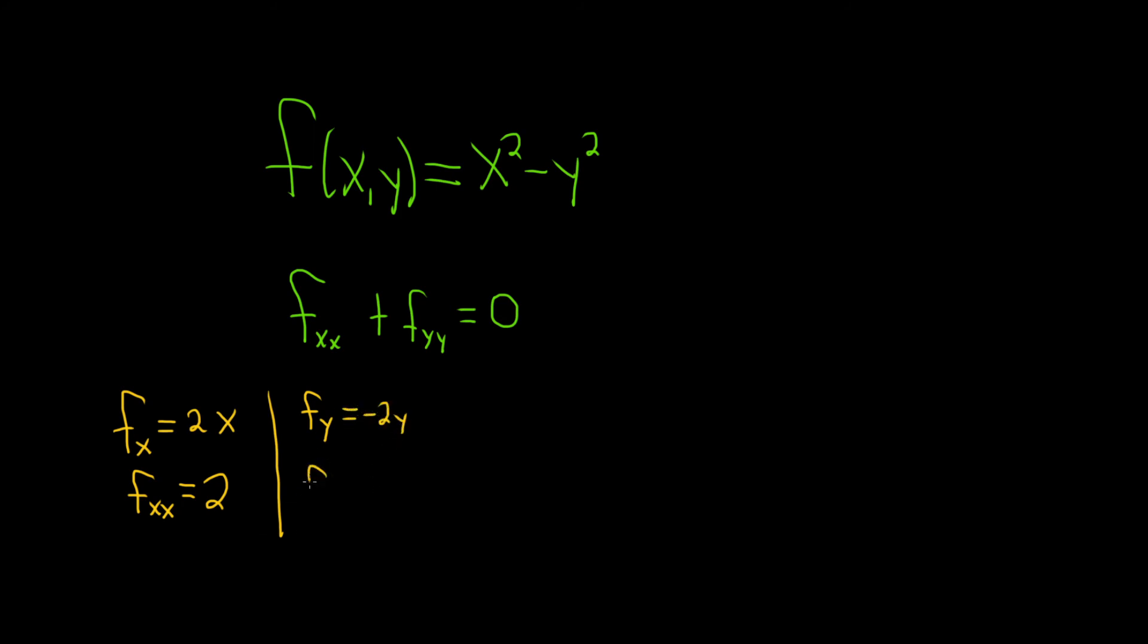Doing it again, taking the partial with respect to y one more time for fyy - the derivative of negative 2y is just negative 2. These are continuous functions, so that's all good.